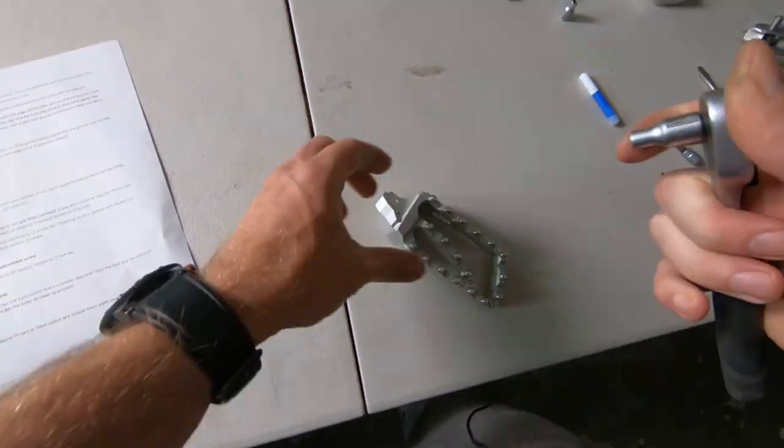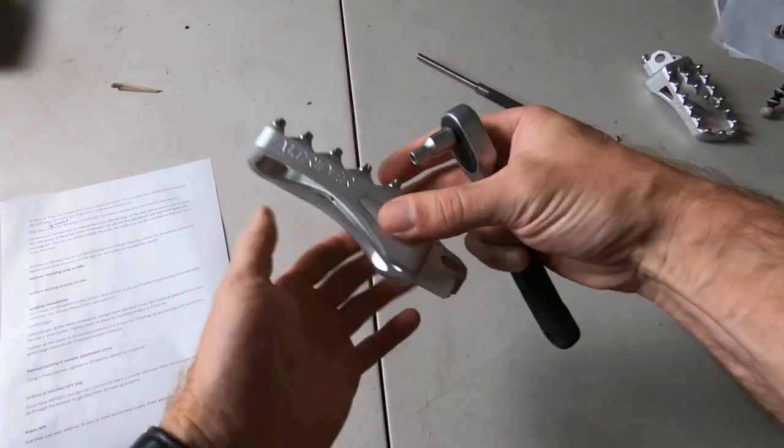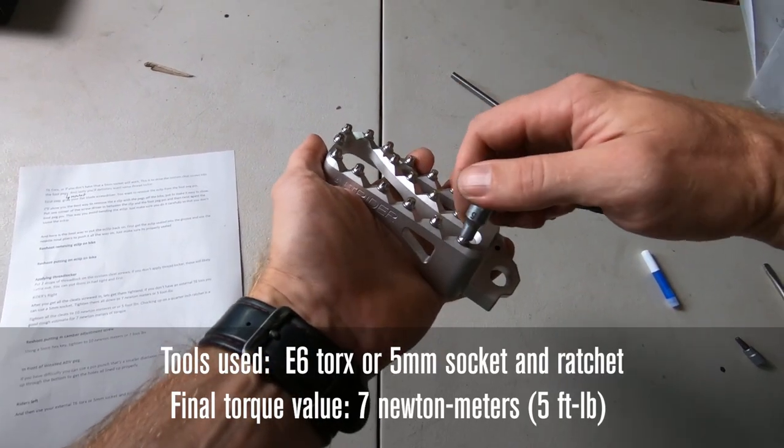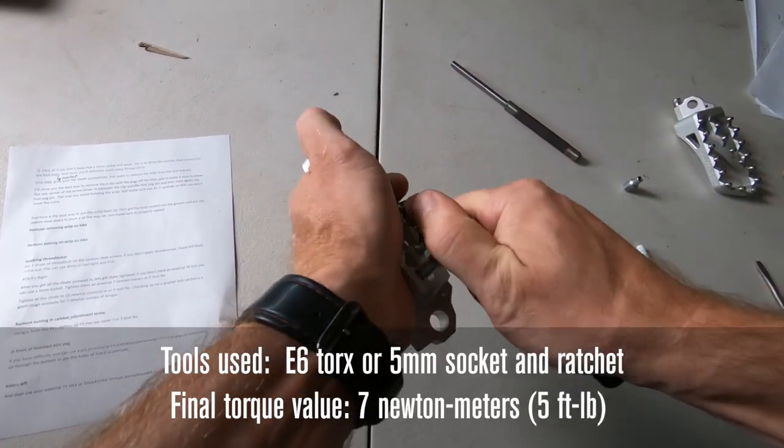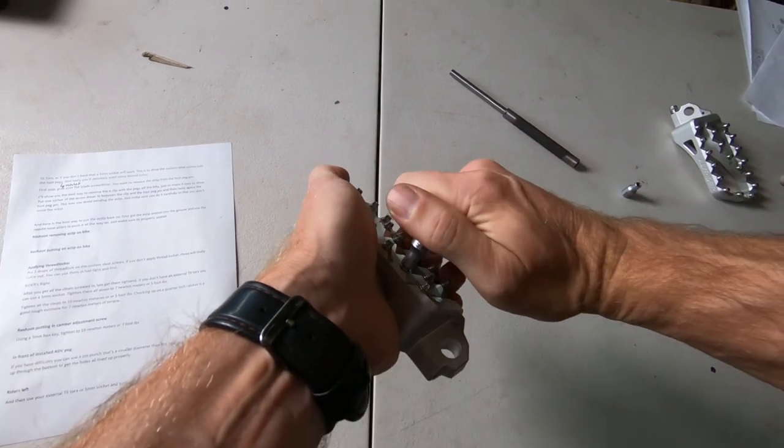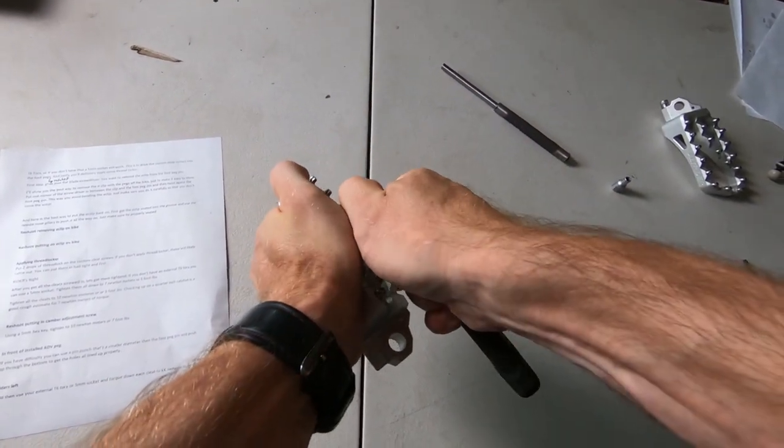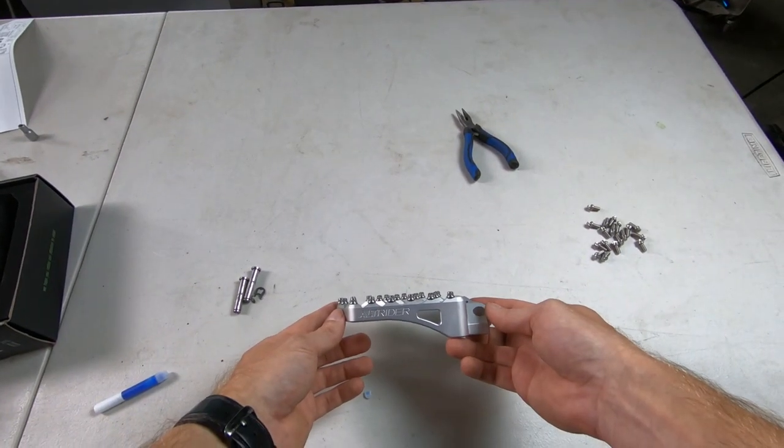After you get all the cleats screwed in, let's get them tightened. If you don't have an external T6 Torx, you can use a 5-millimeter socket. Tighten them down to 7 newton meters or 5 foot pounds. Choking up on a quarter-inch ratchet is a good estimate for 7 foot pounds of torque. This is ready to go.